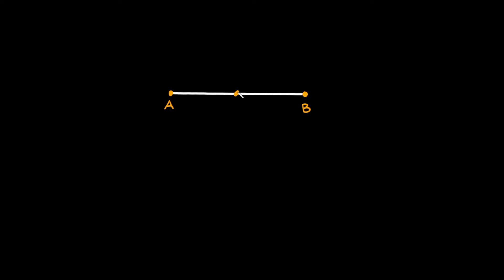Midpoints are just points that divide a segment, like AB, into two equal pieces. These little tick marks I put right here just mean that this segment is equal to this segment. We can also label that point with an M.